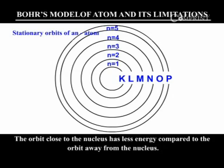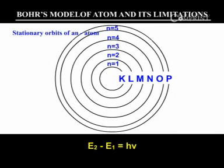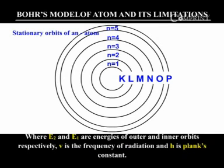The orbit close to the nucleus has less energy compared to the orbit away from the nucleus. When an electron jumps from a higher energy orbit to a lower energy orbit, the difference in energy is emitted as radiation. E2 minus E1 is equal to hν, where E2 and E1 are energies of outer and inner orbits respectively. ν is the frequency of radiation and h is Planck's constant.